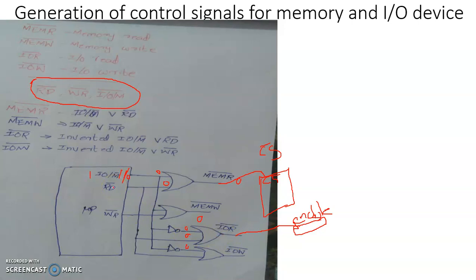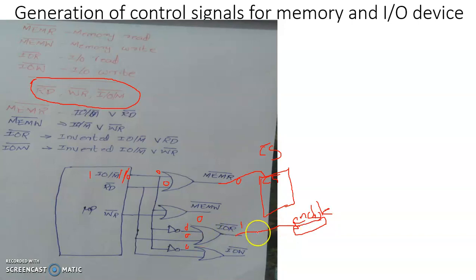When performing a read operation, RD̄ will already be low, so low OR low gives overall low. Now, how do we distinguish a memory read operation from an IO read operation? When the address is meant for memory, the IO/M̄ line is low, and negating it gives a logic high. One OR zero gives one, so the IO device enable signal is high — meaning the IO device is not enabled for a memory address.